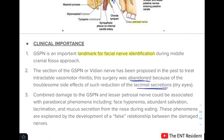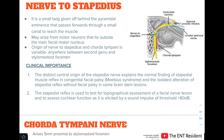Third, combined damage to the greater superficial petrosal nerve and lesser petrosal nerve could be associated with a paradoxical phenomenon that includes facial hyperemia, abundant salivation, lacrimation, and mucous secretion from the nose during eating. This phenomenon is explained by the development of a false relationship between the damaged nerves.